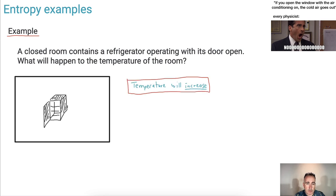So what will happen to the temperature of the room? It might be counterintuitive, but the temperature of the room will actually increase. Your intuition might say, no, a fridge cools things. So if you leave it open, it's just going to cool the room. Well, locally maybe, but in this entire sealed room, what's really happening?